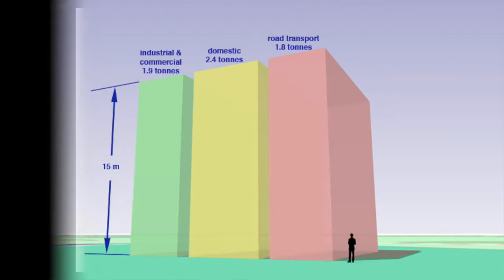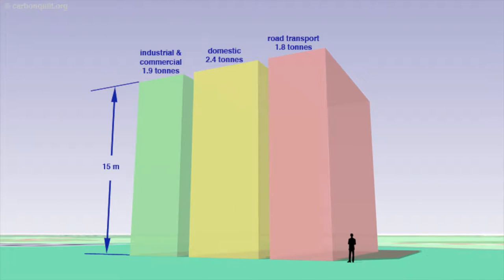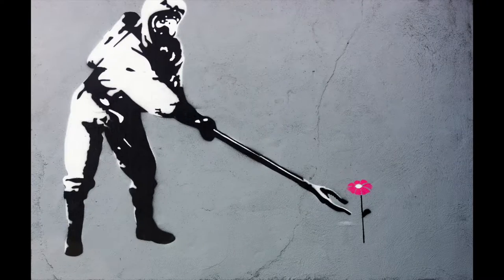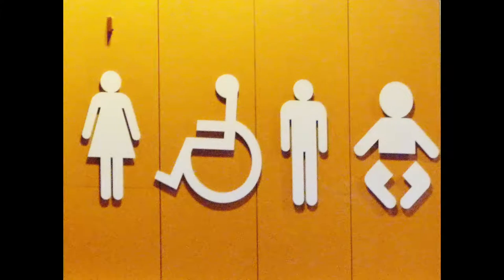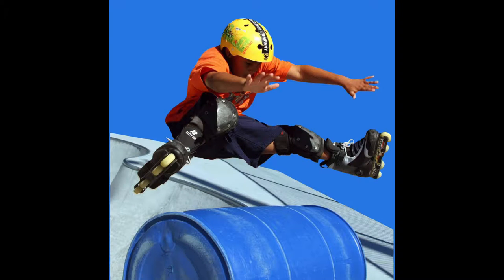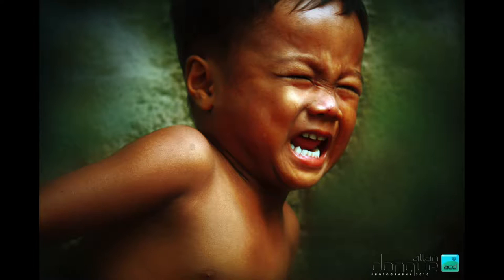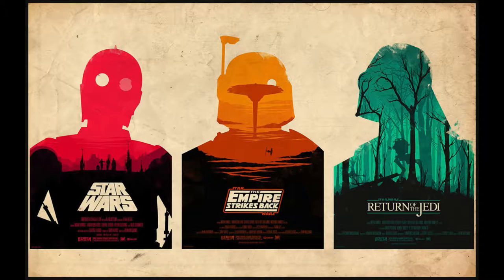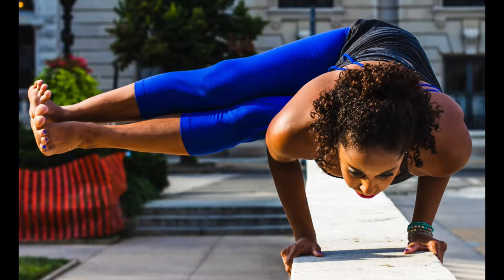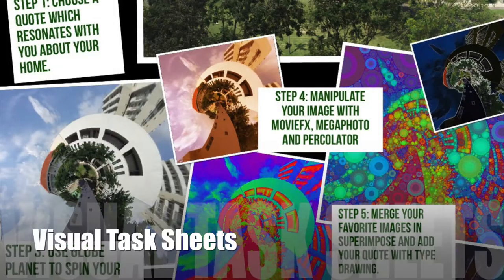Visual learning is a style of learning where information is organised, analysed and retained with the use of images. Images talk to us, move us, make us remember and inspire us. We also learn better through images than text.